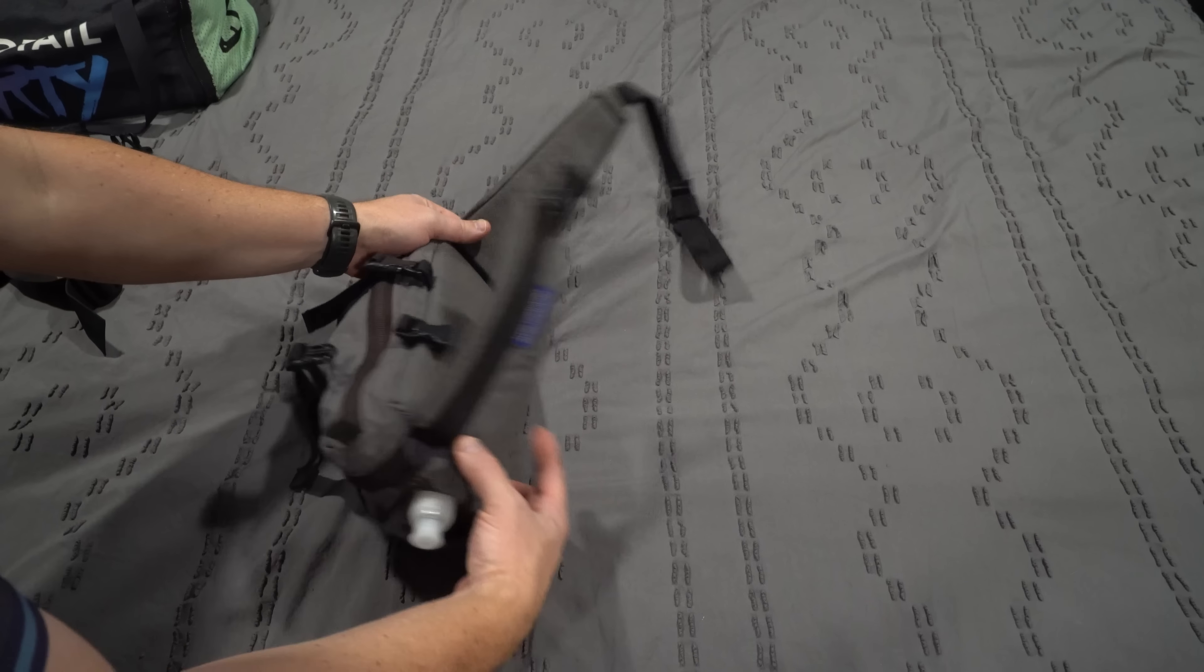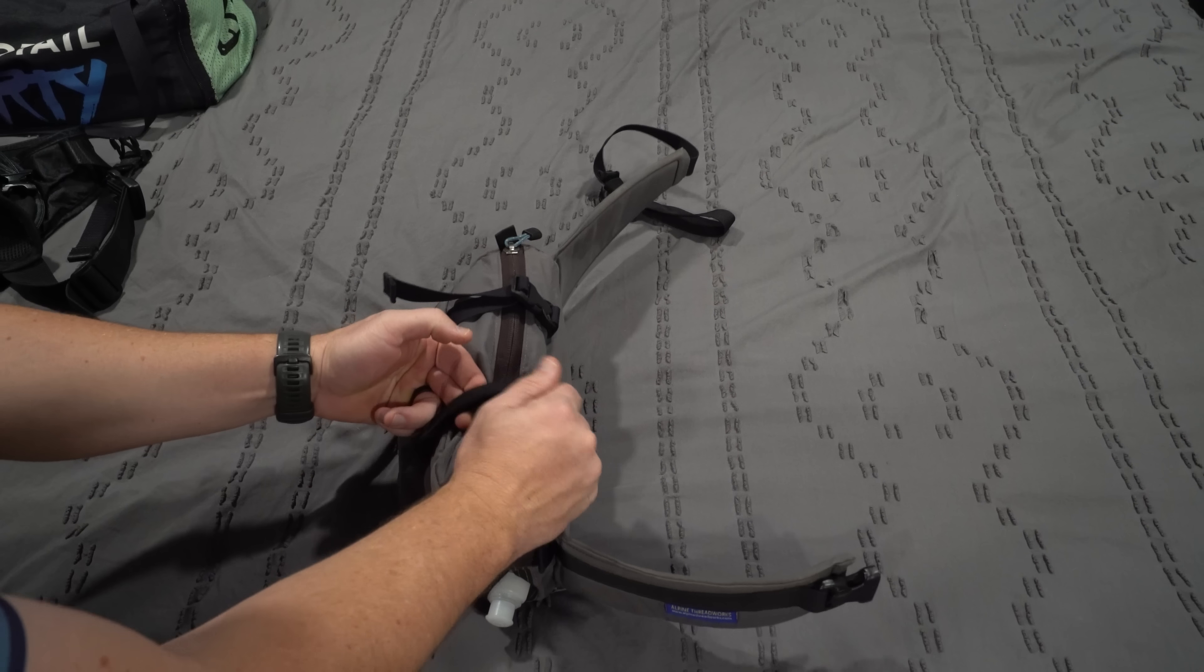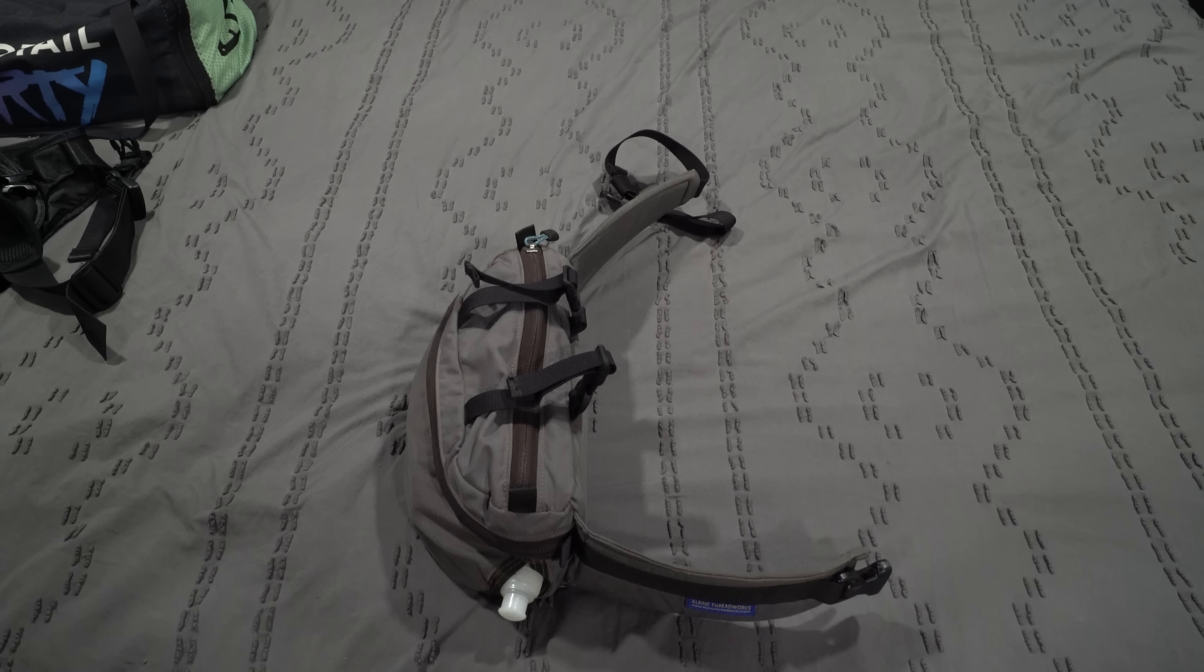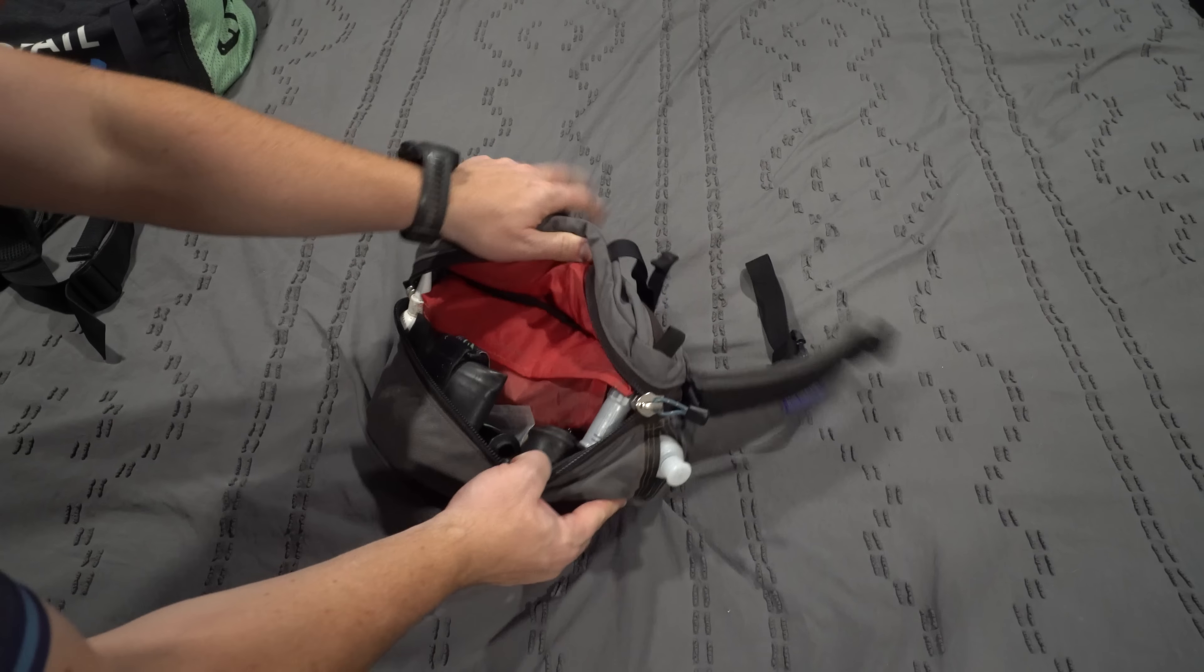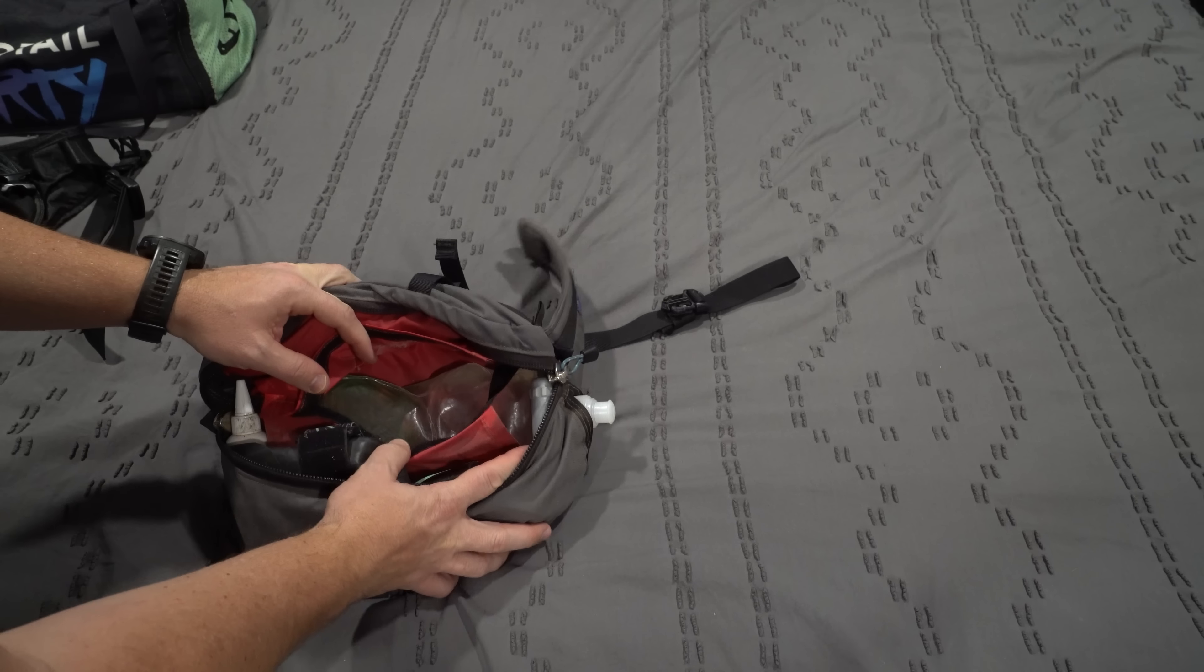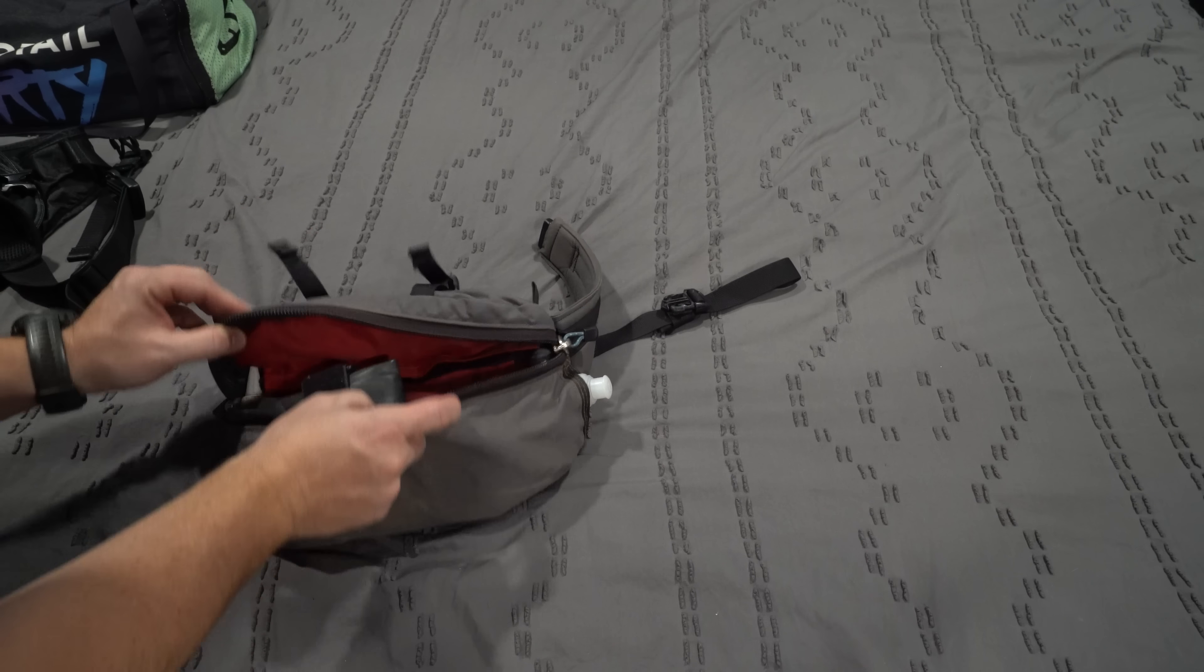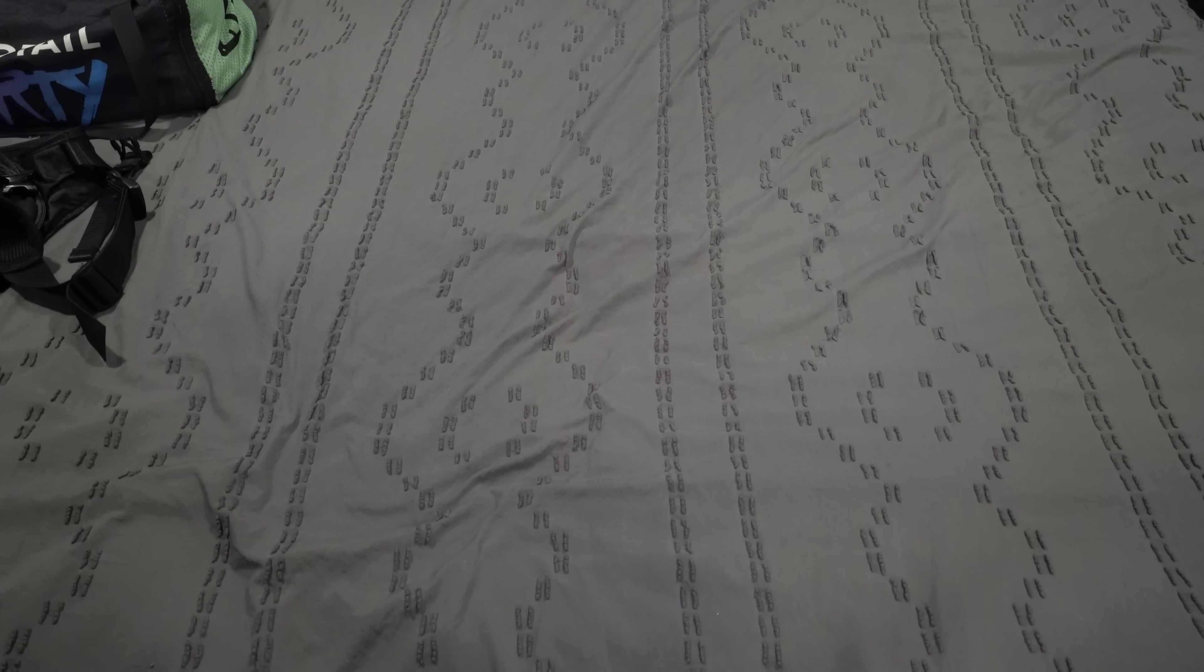I've tried over 30 different hip packs and I've narrowed it down to my three favorites. First up is my Alpine Threadworks. This is custom made by a guide up in Canada. He does amazing work. I've put these through the ringer. One of these got stolen and I missed it so much I had to make me another one. It's got a one liter platypus in it that just sticks out the side here and I use that to refill my other water bottles.